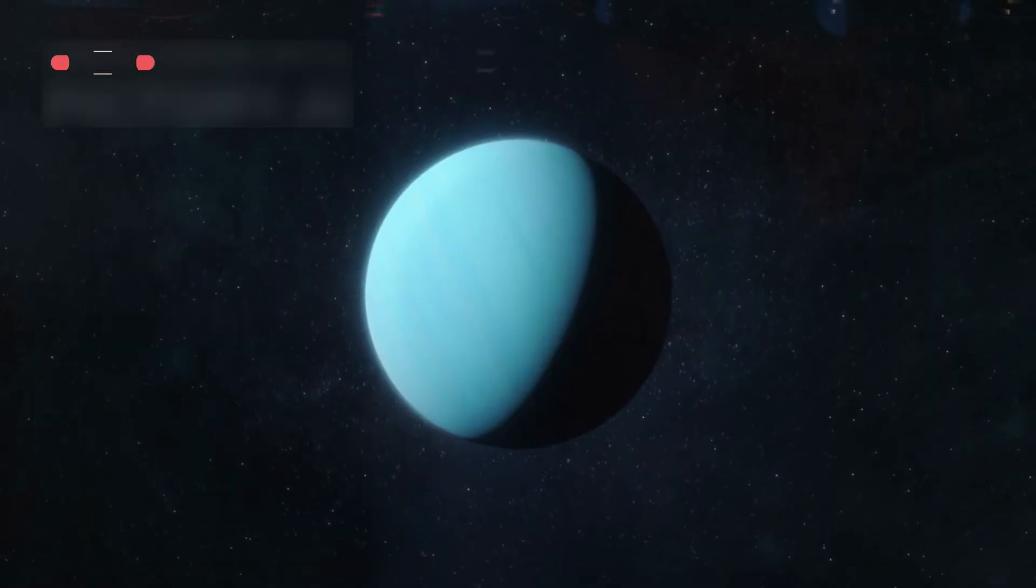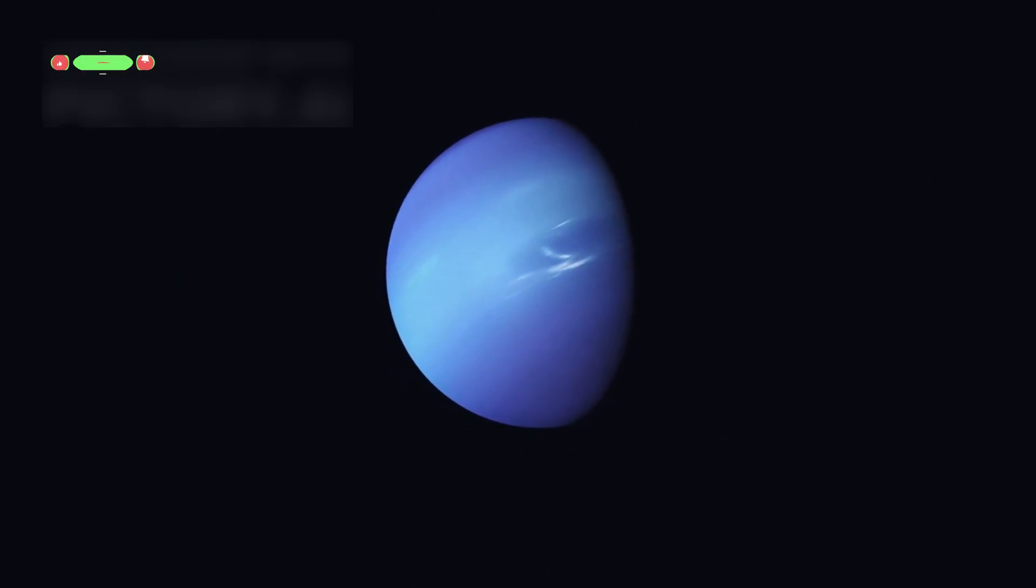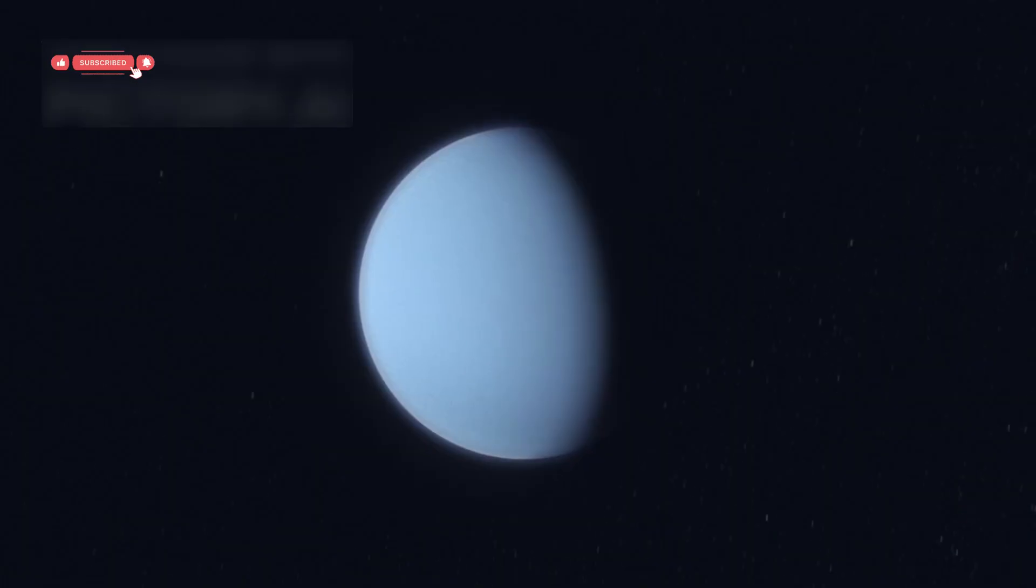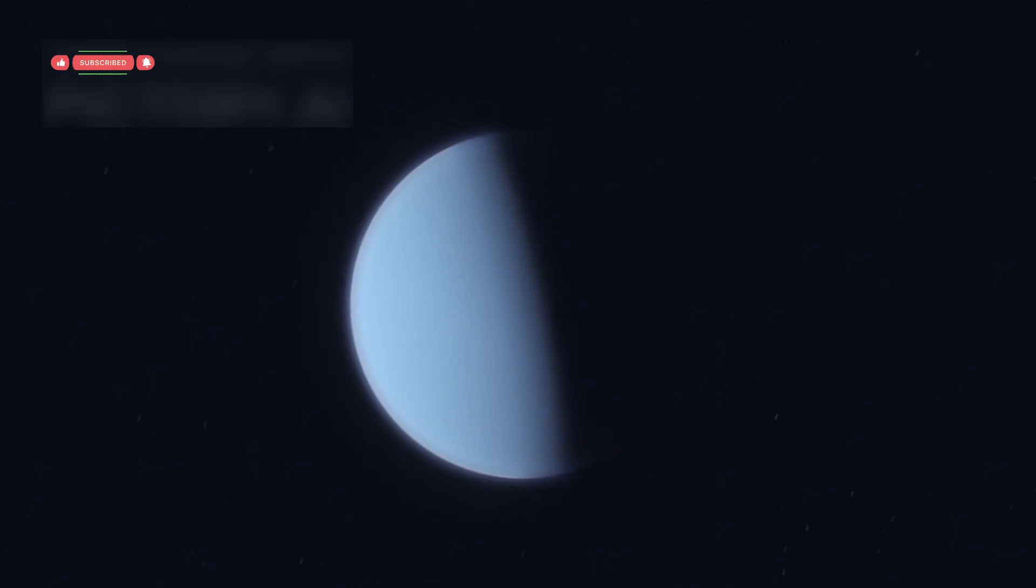Voyager 2 then went even further. It became the first and only spacecraft to fly by Uranus in 1986 and Neptune in 1989. At Uranus, it discovered ten new moons and a set of faint rings, and found that Uranus spins on its side. The probe also studied Uranus's tilted magnetic field and atmosphere.